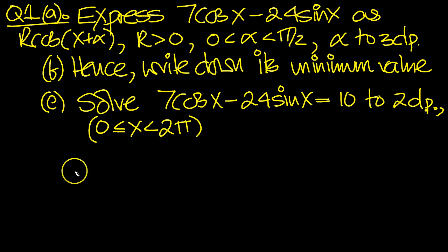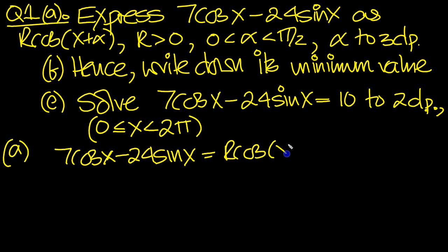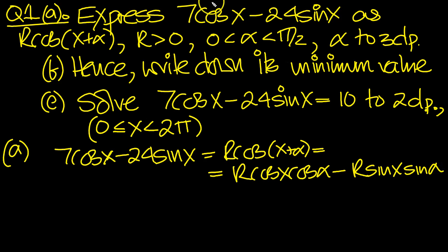So let's have a look at this. We need to write 7cos(x) minus 24sin(x) in the form r·cos(x+α), and we know that equals r·cos(x)cos(α) minus r·sin(x)sin(α). So that's what we've got.